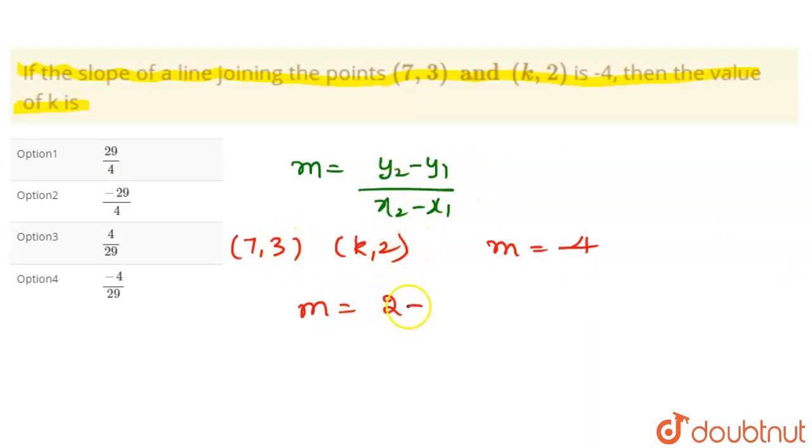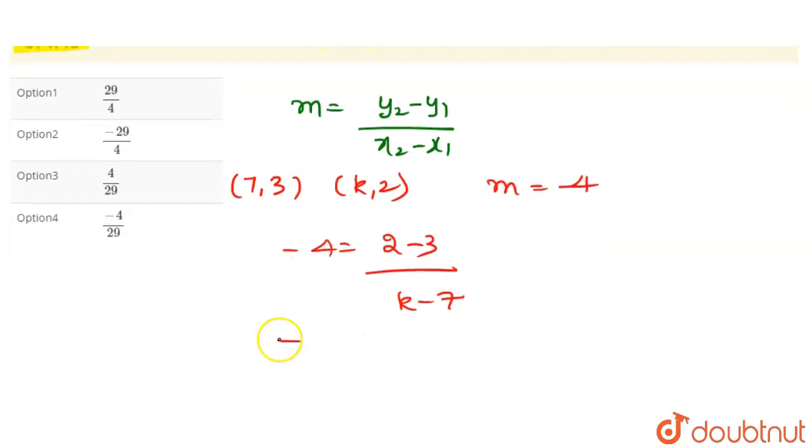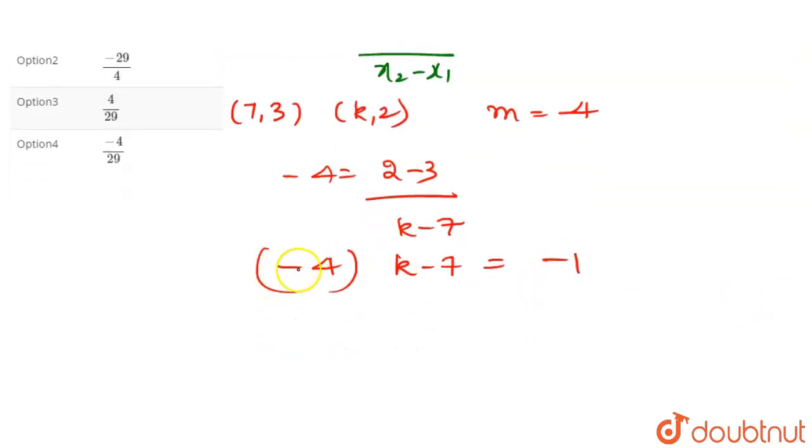(2 - 3)/(k - 7). Since m is given to be -4, we have -4 = (2 - 3)/(k - 7). Now, 2 minus 3 is -1, so -4 = -1/(k - 7). Cross-multiplying, -4(k - 7) = -1. The negative signs cancel out, and we're left with 4(k - 7) = 1.